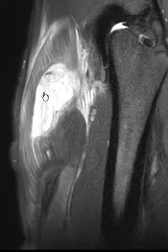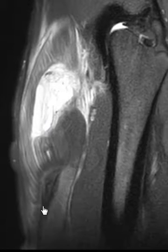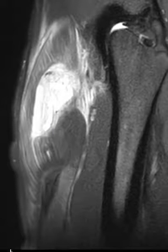This is a large tear involving parts of both the indirect and direct heads, but the whole indirect head is torn, and so that's why the tendon is retracted distally here, causing this dark area.